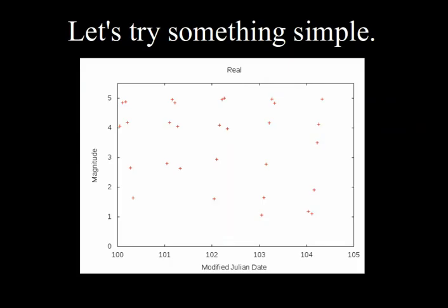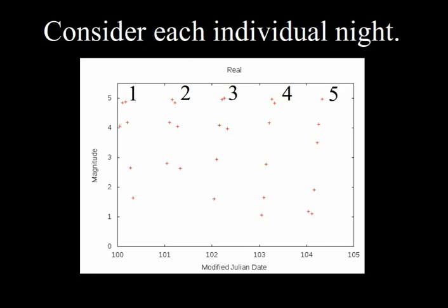So let's just try something very simple with the data. So here's our original, now sparsely sampled data set. And you can see that we have five different nights that we've observed this object here.